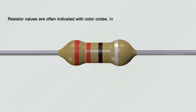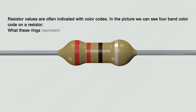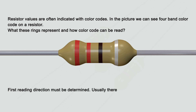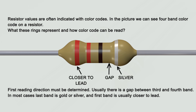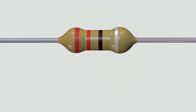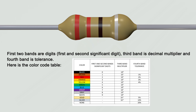Resistor values are often indicated with color codes. In the picture we can see a 4-band color code on a resistor. The reading direction must first be determined — usually there is a gap between the 3rd and 4th band, the last band is typically gold or silver, and the 1st band is usually closer to the lead. The first two bands are the 1st and 2nd significant digits, the 3rd band is the decimal multiplier, and the 4th band is the tolerance.